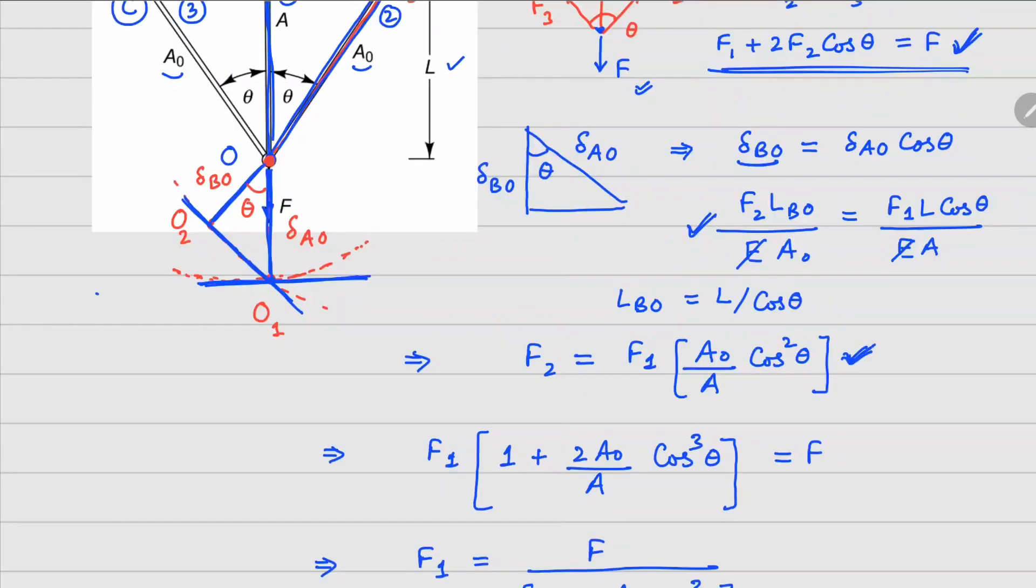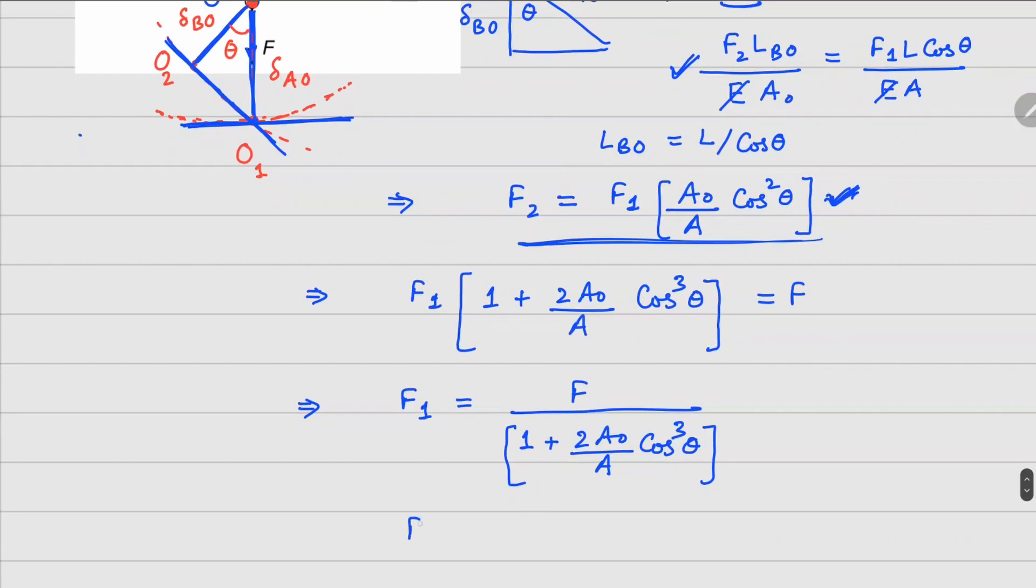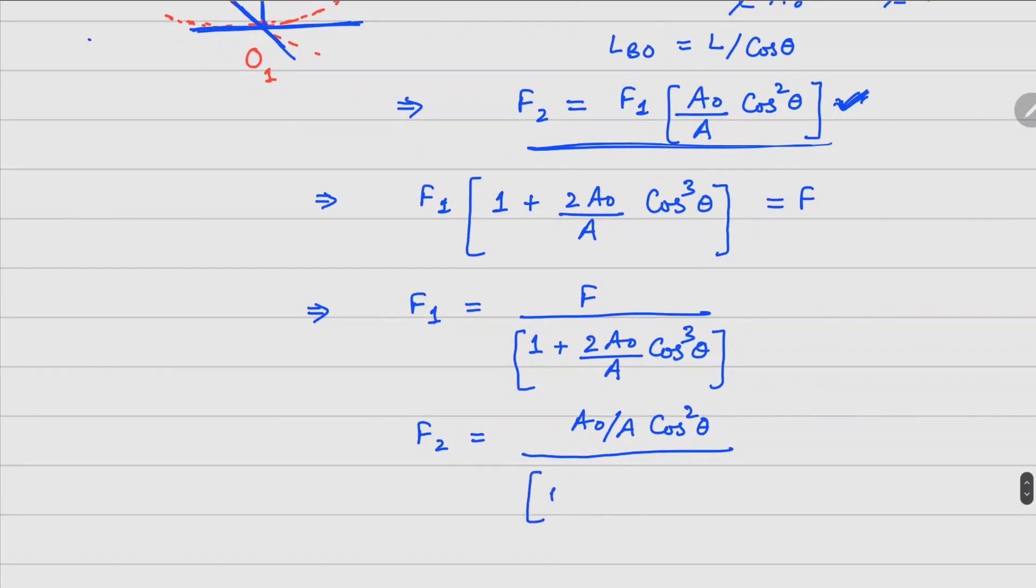Similarly, if I use this one right here which is giving us the value of F2, your F2 can be written as A0 divided by A cos squared theta that goes on top, divided by the same denominator, which is 1 plus 2 A0 divided by A cos cubed theta, times F.